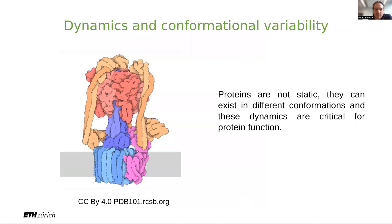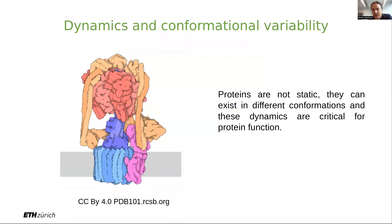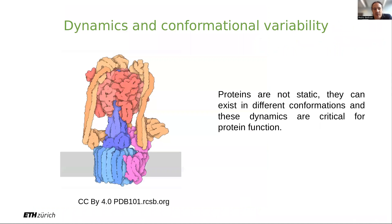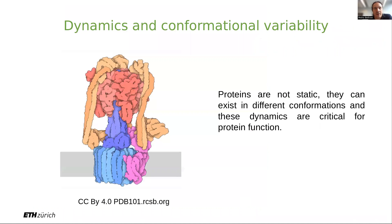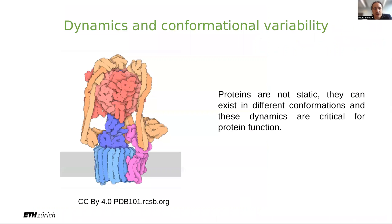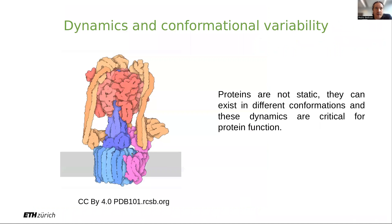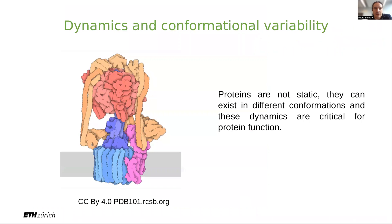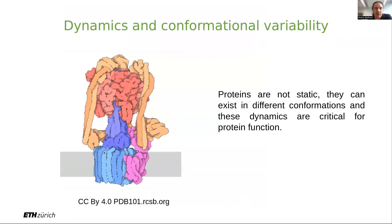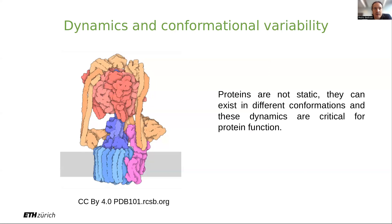We often see representations of structures as static because that's how we see them as pictures, but in fact they are quite dynamic. Here's an example of a protein that generates an ATP gradient. This rotation of these protein subunits is important for its function — without this dynamics, the protein would not be able to perform its function.